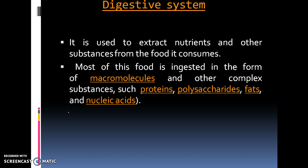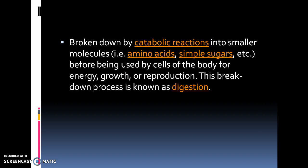Most of this food is ingested in the form of macromolecules and other complex substances such as proteins, polysaccharides, fats and nucleic acids, which are broken down by catabolic reactions into smaller molecules — that is amino acids and simple sugars etc. — before being used by cells of the body for energy, growth or reproduction. This breaking down process is known as digestion.